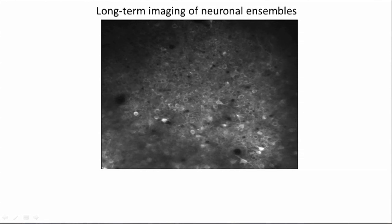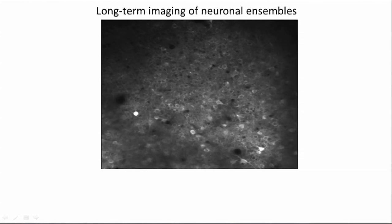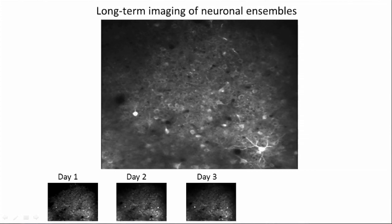How are sensory representations shaped by the state and the history of an animal? We addressed this question in the mouse olfactory bulb. Using chronic in vivo 2-photon calcium imaging combined with genetically encoded calcium indicators, we can record the activity of large ensembles of neurons of identified cell types, following the activity of the same set of neurons over the course of days, weeks, and months.